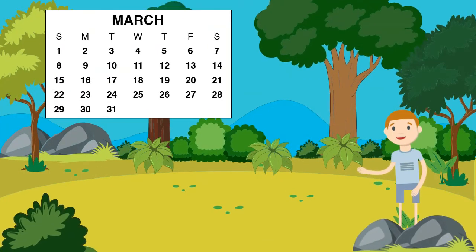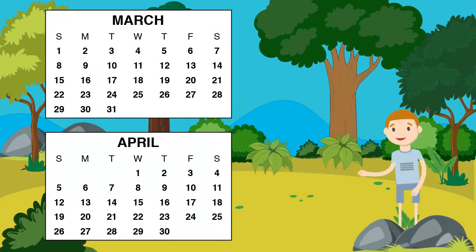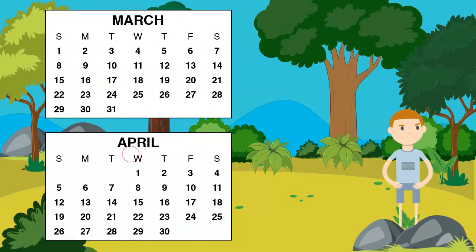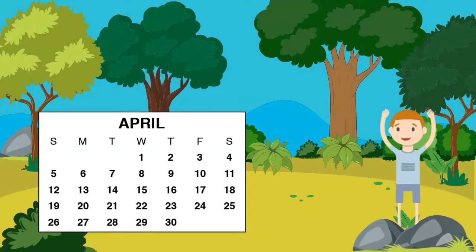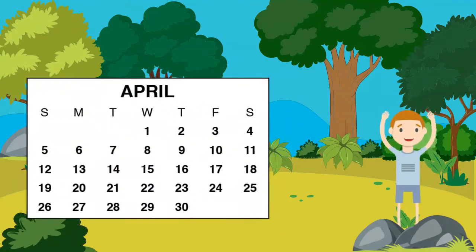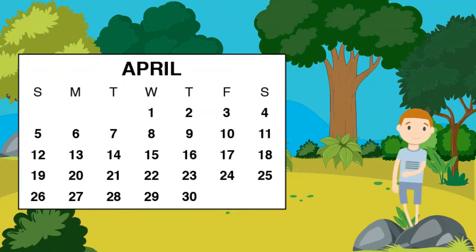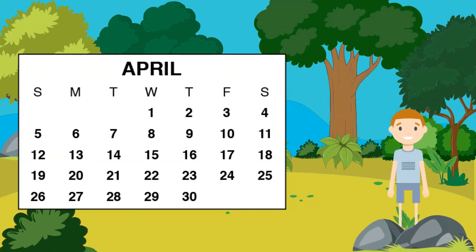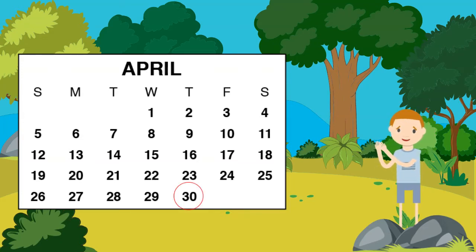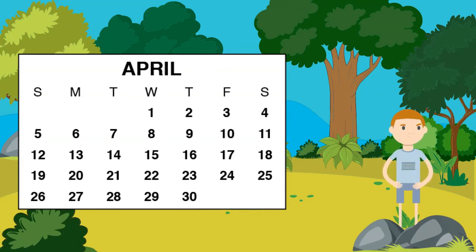The month after March is April. The day after March 31st is April 1st. We are now in a brand new month. How many days are in the month of April? Great! There are 30 days in April. Most months have either 30 or 31 days.